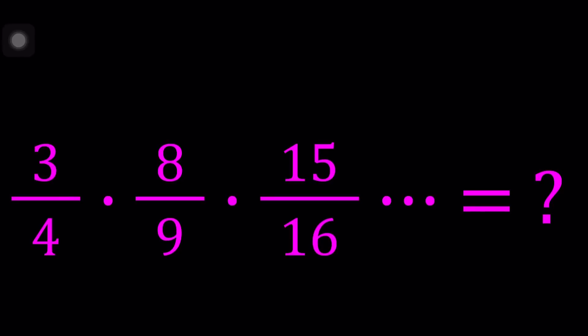Hello everyone. In this video we're not going to be solving an equation — we're going to be evaluating an infinite product. We have 3 over 4 times 8 over 9 times 15 over 16, and so on all the way to infinity, where the denominators are perfect squares and the numerators are always one less than the denominator. Make sense?